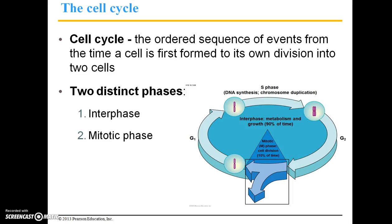Let's talk about the cell cycle. The cell cycle is the ordered sequence of events from the time a cell is first formed to its own division into two cells. There are two distinct phases of the cell cycle: interphase and then the mitotic phase. Most of a cell's time is simply spent in interphase — this is the non-dividing stage of the cell cycle. The cell's normal metabolism occurs and growth occurs, and a typical cell will spend 90% of its time in interphase.